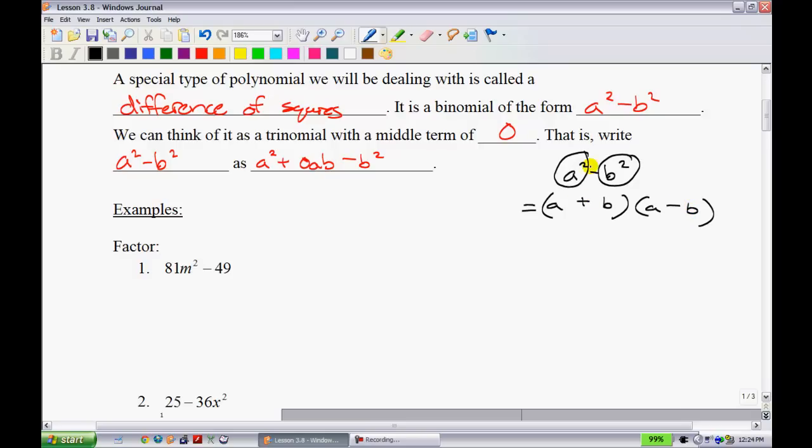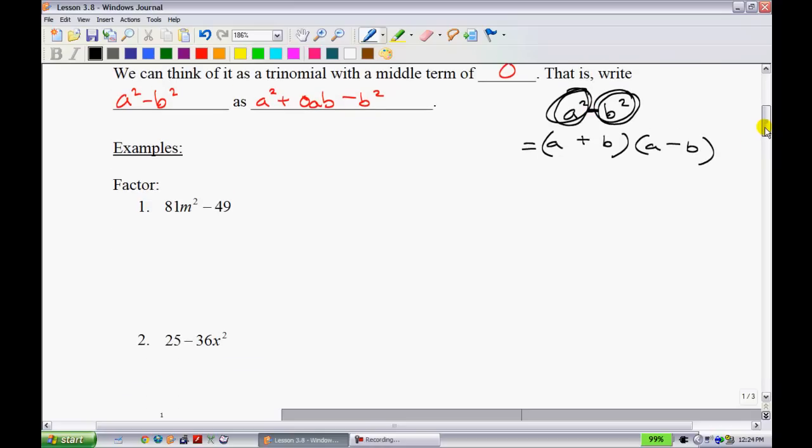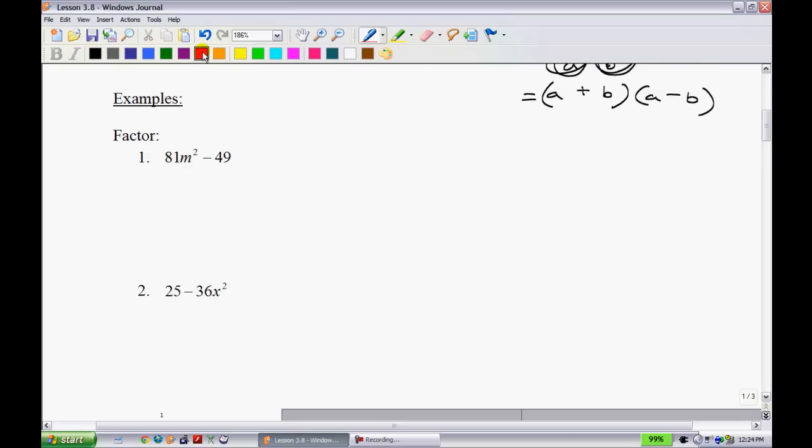Now, the a² and b² first have to be perfect squares so that you can take the square root of them. And also, it has to be a subtraction sign in the middle. So I'm going to use this method to do these next questions, and you'll see how easy they can be.